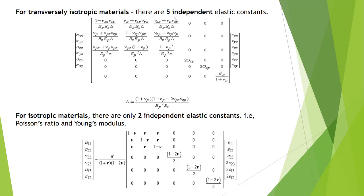Why nu zp? Why not nu zp? Nu zp can be obtained from the relation nu zp over Ep equals nu pz over Ez, and nu p can be obtained from Gzp. So the 5 independent elastic constants are Gzp, Ep, Ez, nu pz, and nu p.